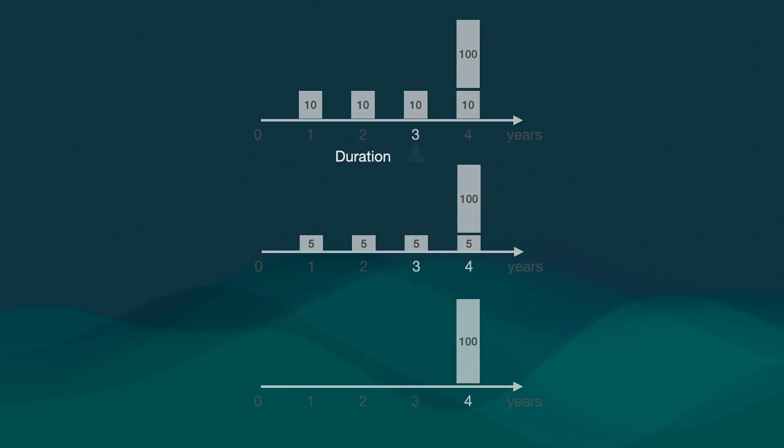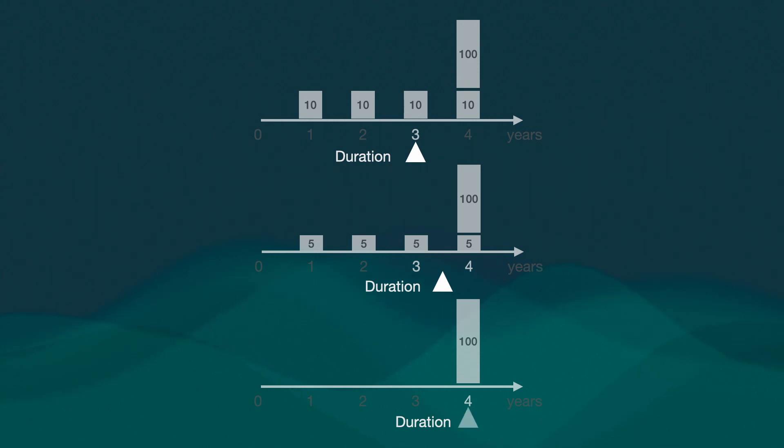The answer to our payback time question is duration. The wedge on the timeline represents duration: it's three years for the first bond, three and a half years for the second, and four years for the last — the zero coupon. Duration is an average of the years before maturity weighted by the present value of the expected payments. The zero coupon has all payments at the end of the fourth year, hence four years. The two coupon bonds have a shorter duration because they make regular payments during their lifetime.